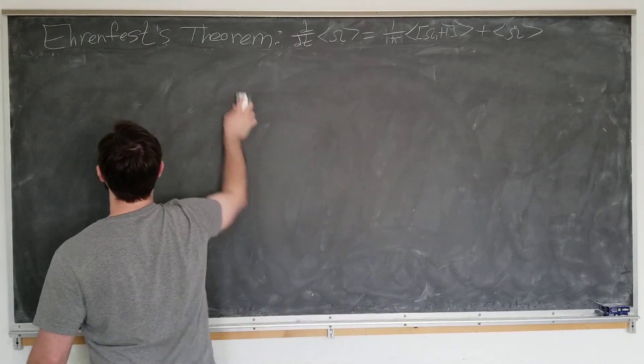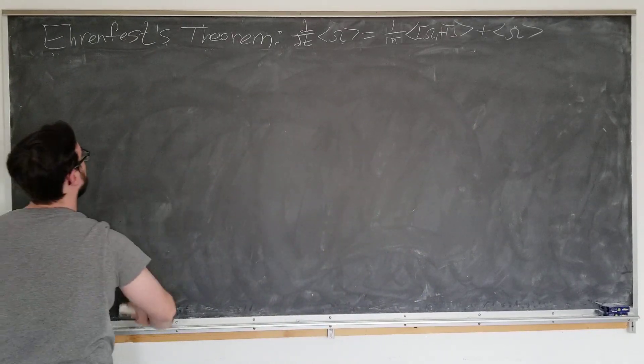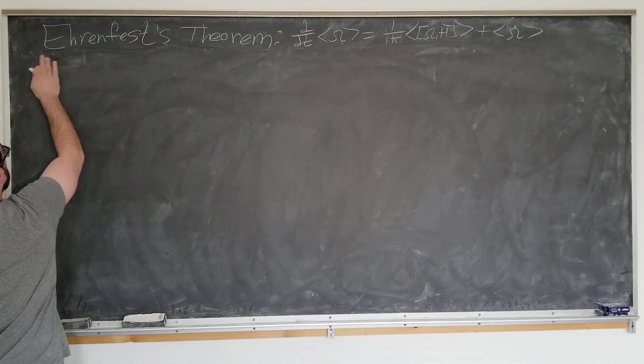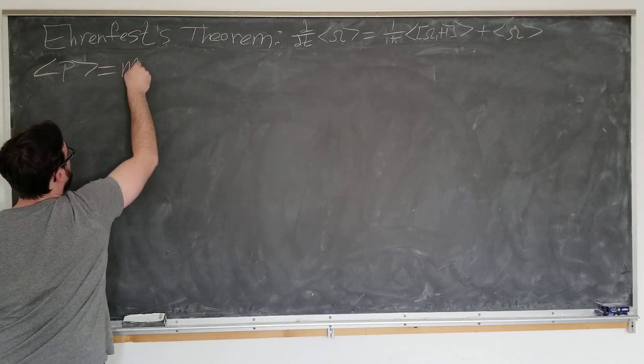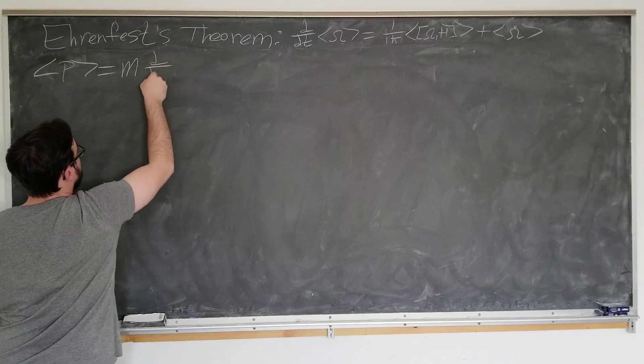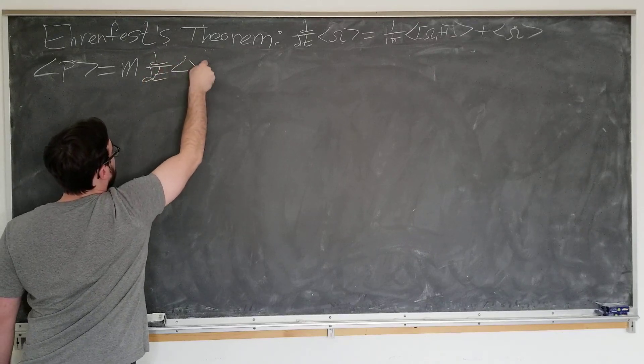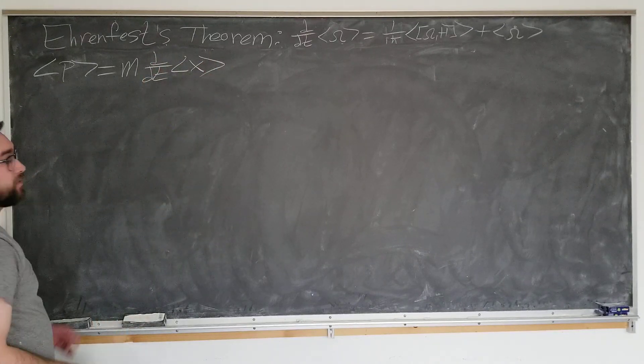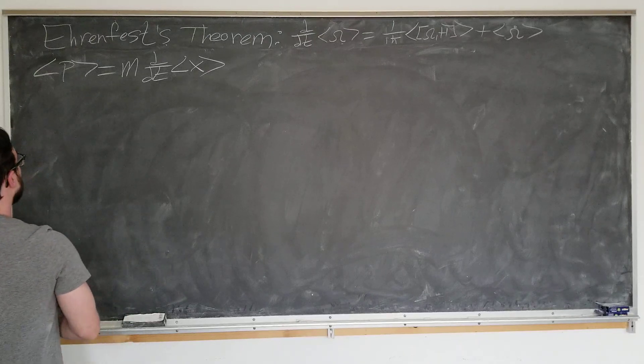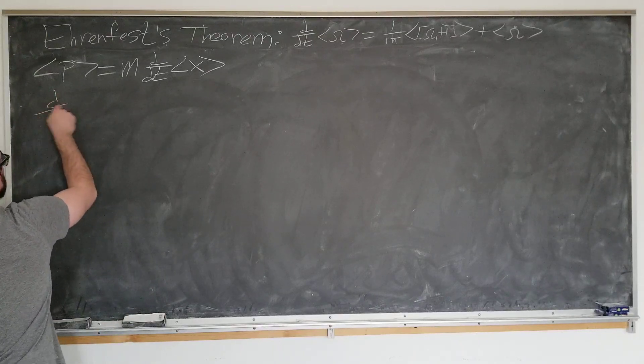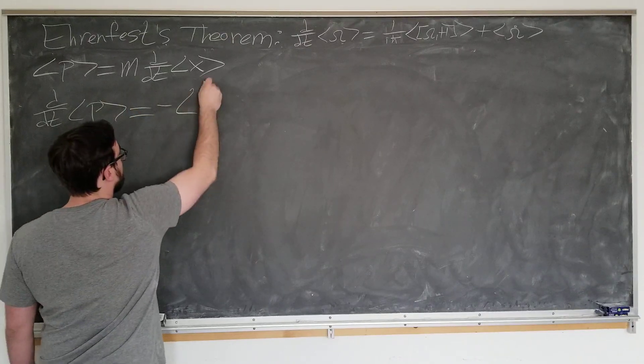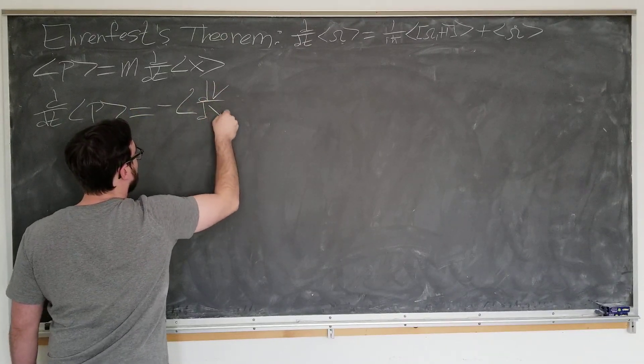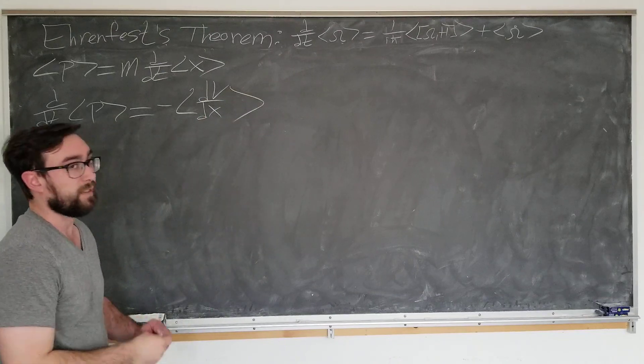We will now discuss the similarity between this and classical laws, and see how it relates to what we know. Let's write what we know down. We have learned that expectation value of p equals m d by dt expectation value of x, looks like p equals mv.